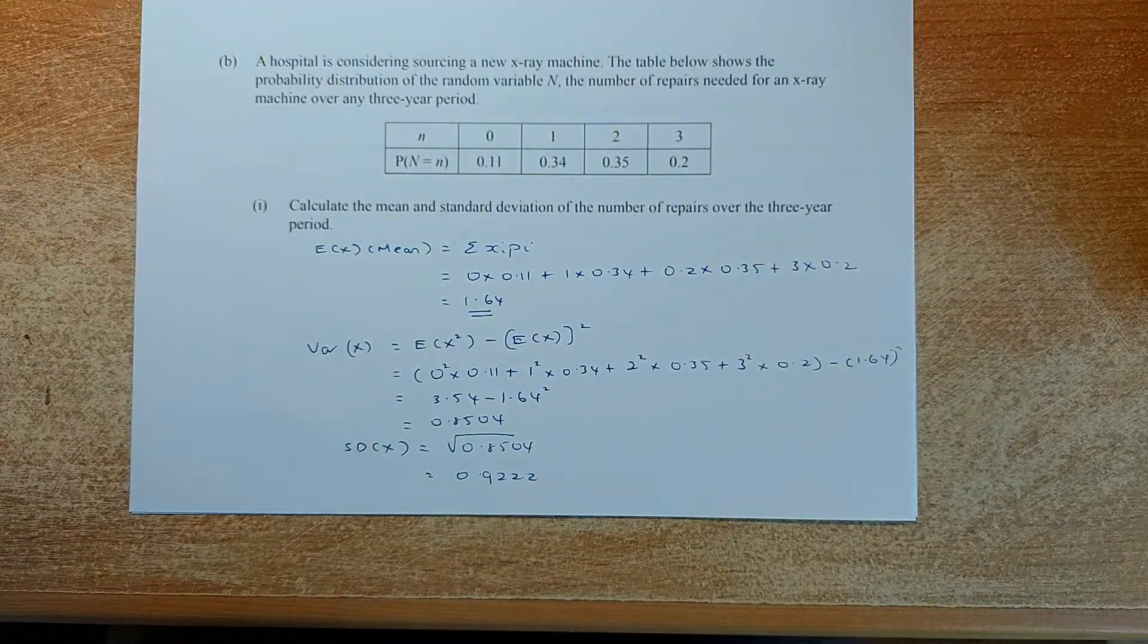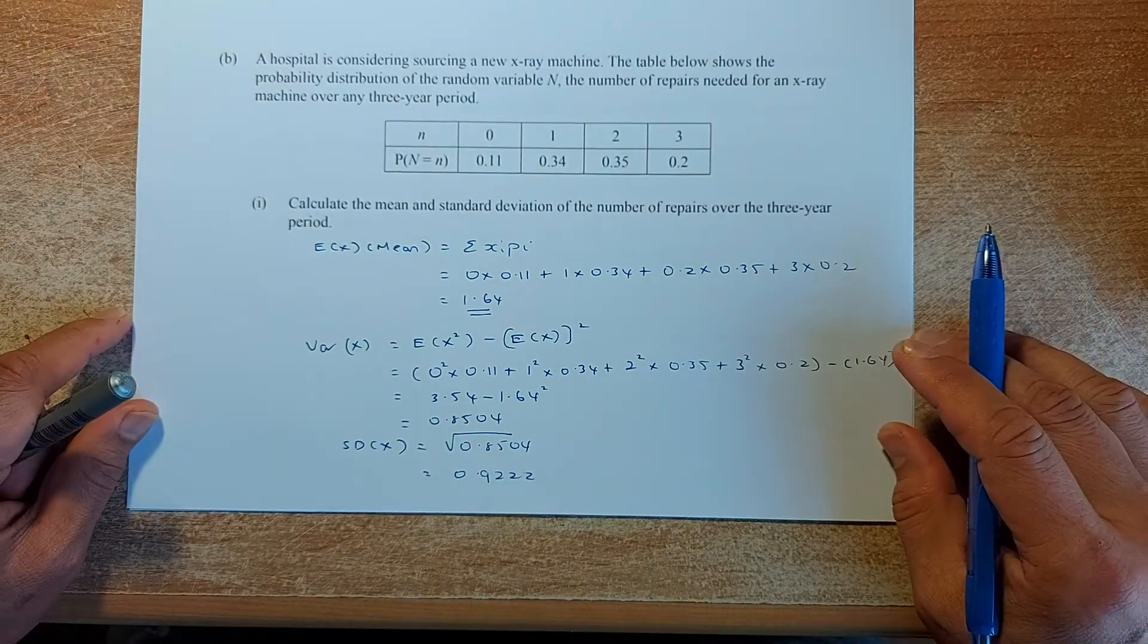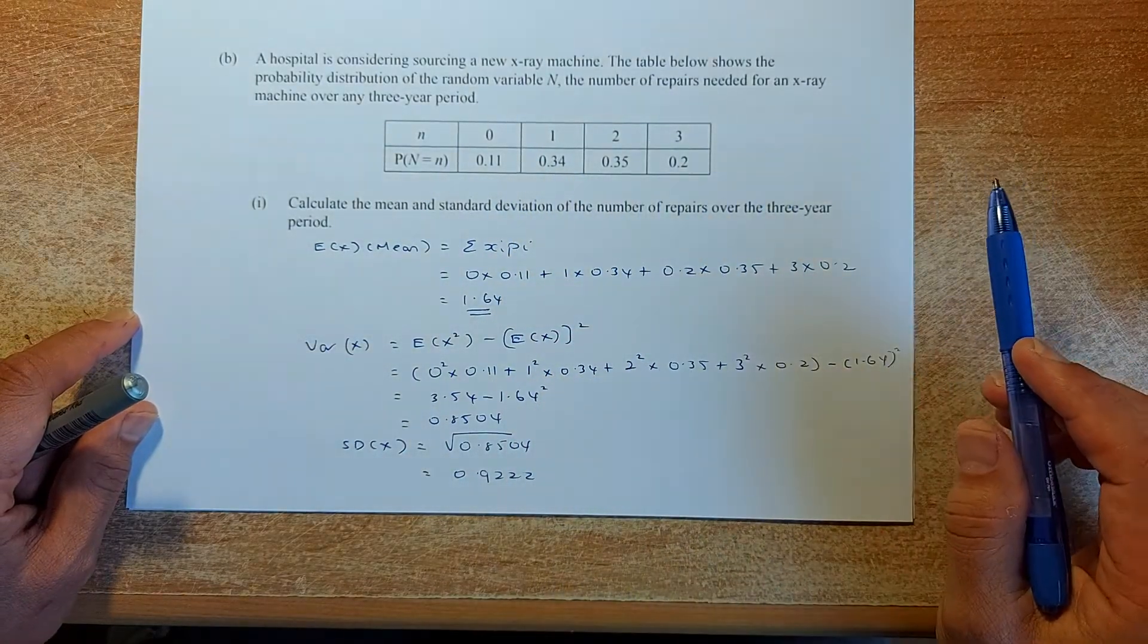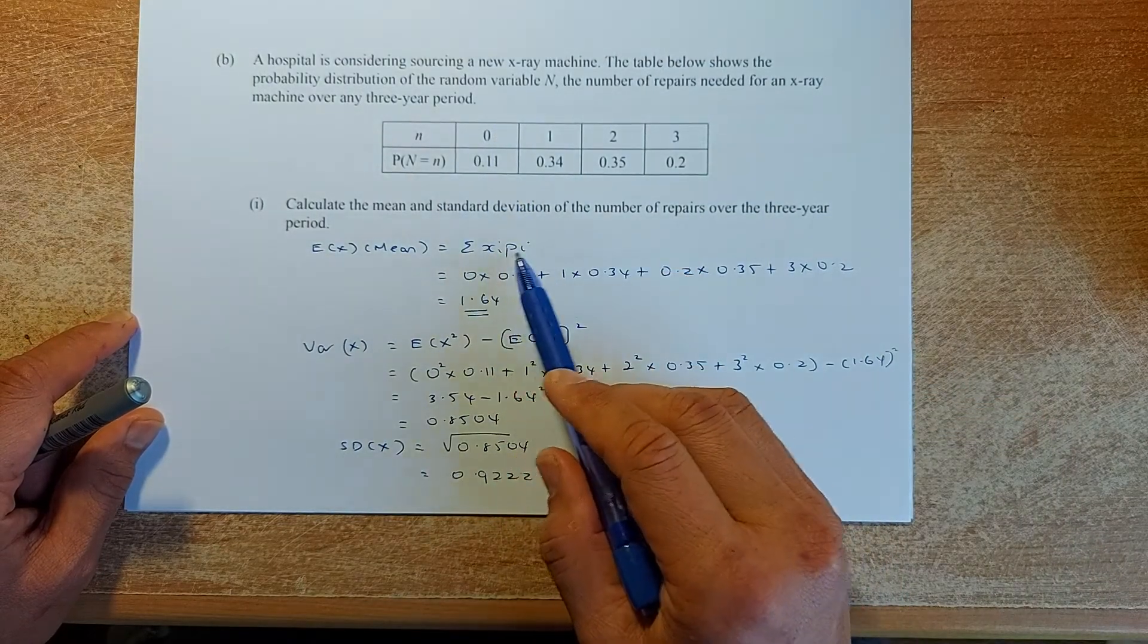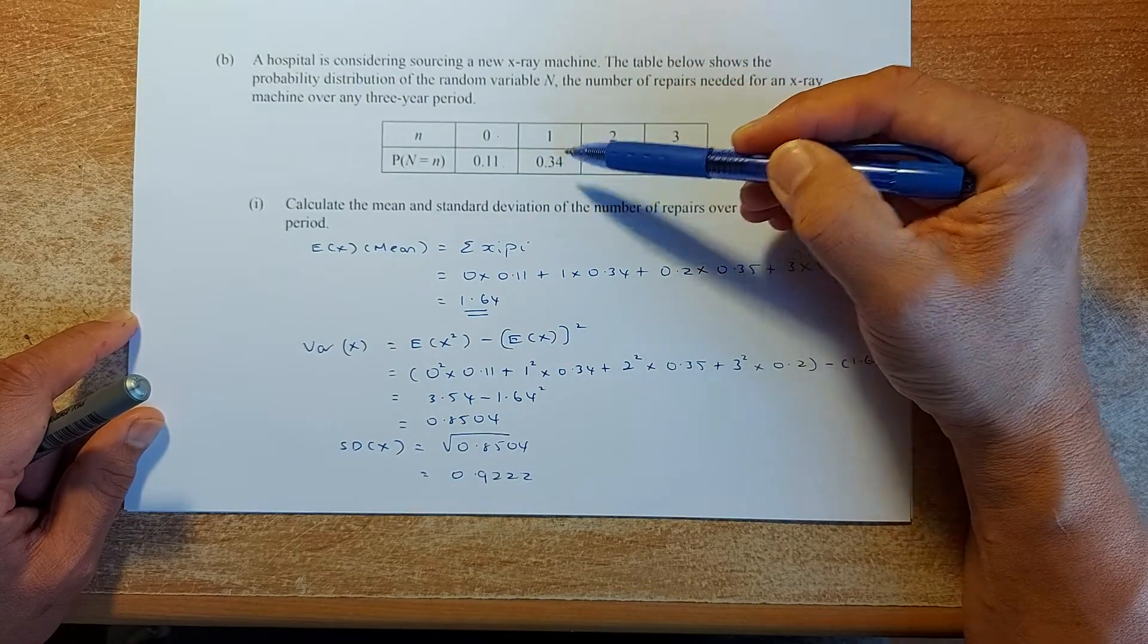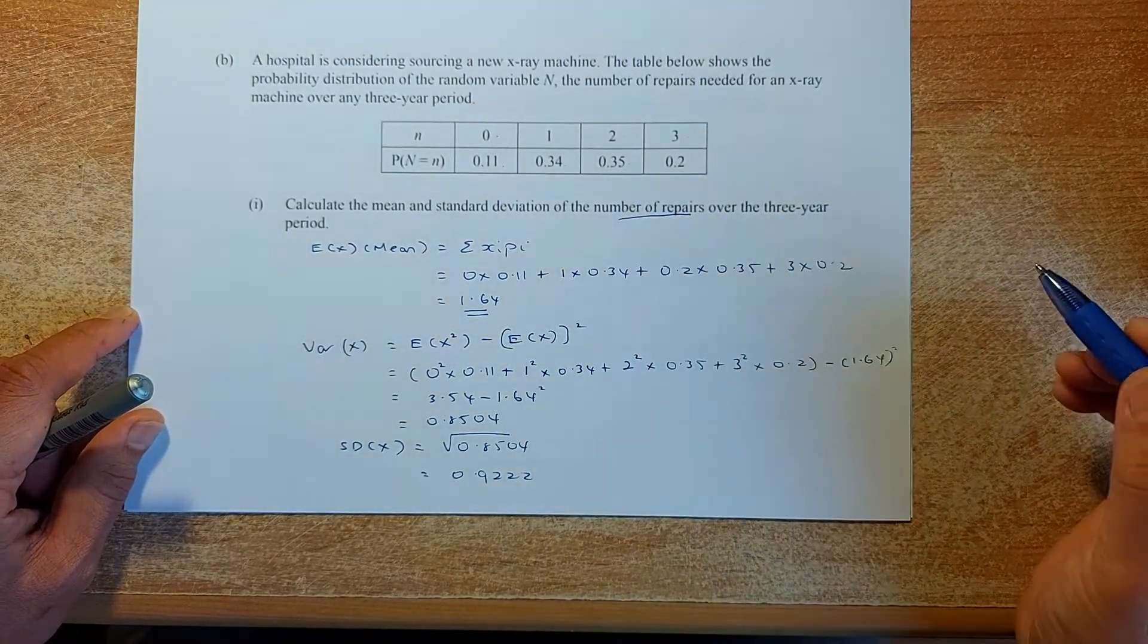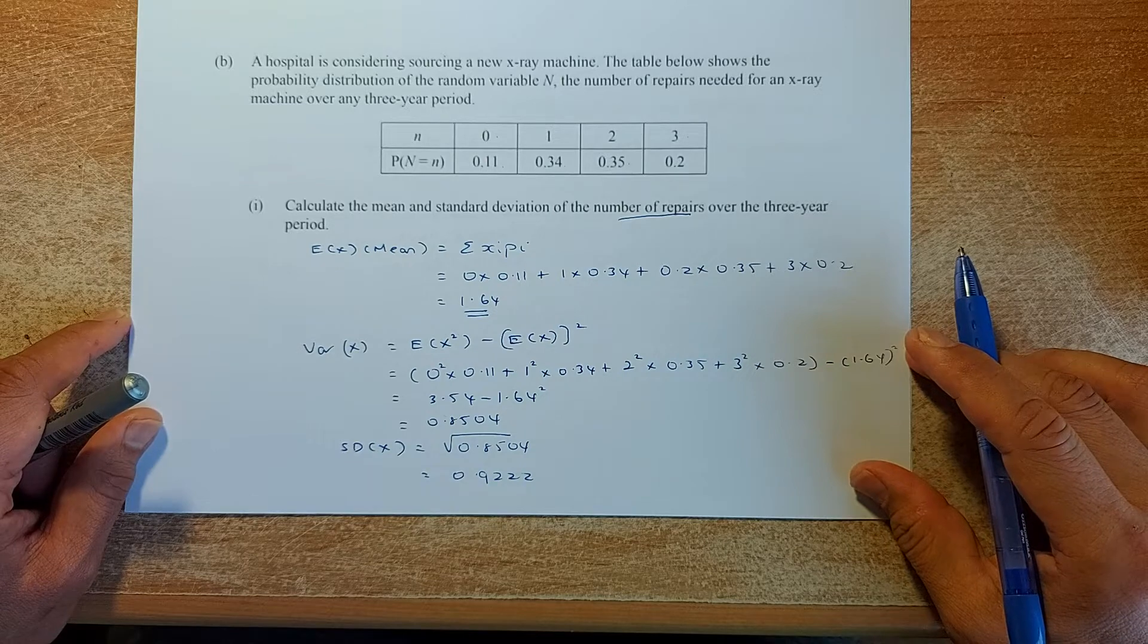A hospital is considering sourcing a new x-ray machine. This shows the probability distribution of a random variable n, the number of repairs needed. Calculate the mean and standard deviation. The formula for the mean is sum of n × xi × pi. So you multiply 0 times 0.11 plus 1 times 0.34 plus 2 times 0.35 plus 3 times 0.2. The answer is 1.64. So the number of repairs over a period of 3 years is going to be 1.64 repairs.